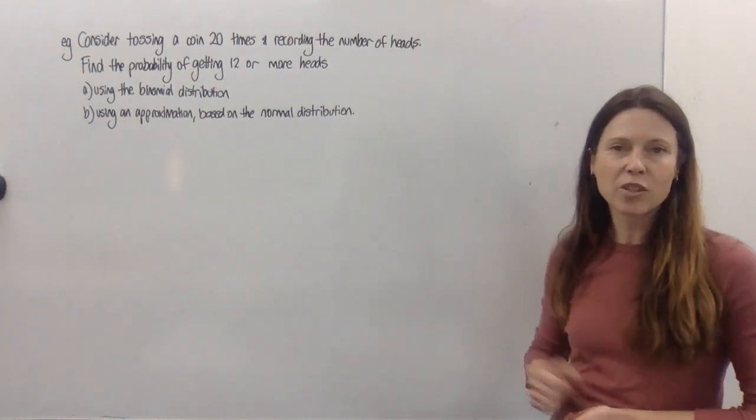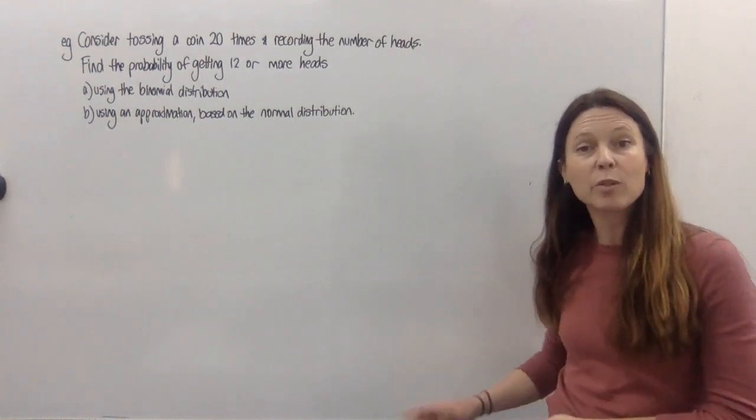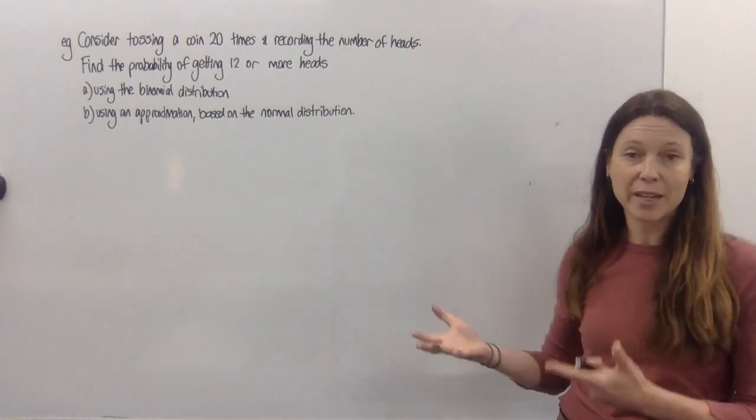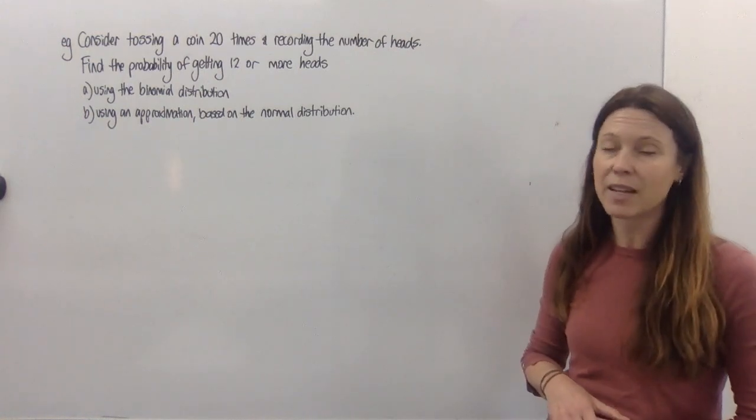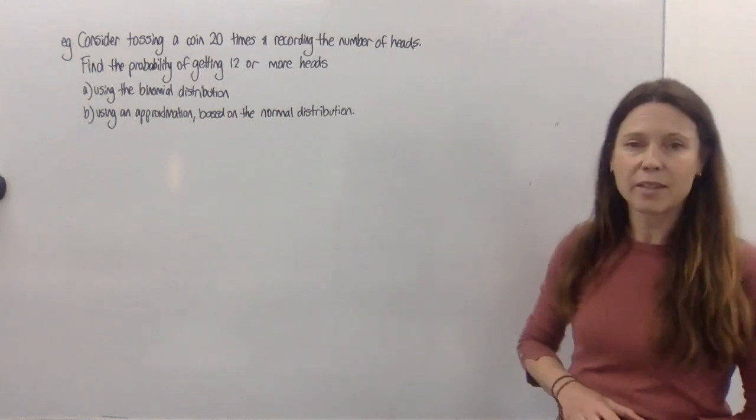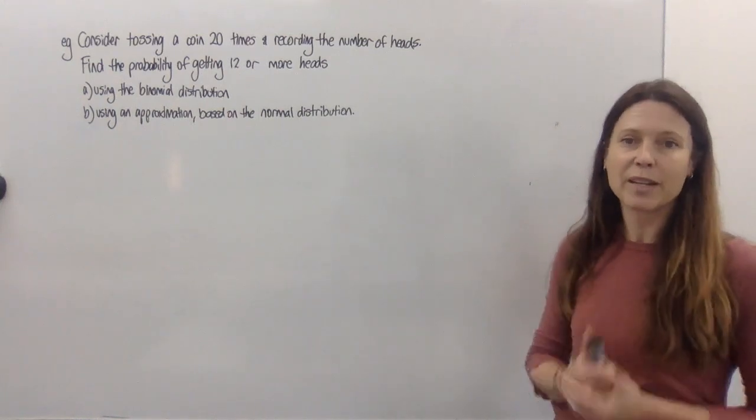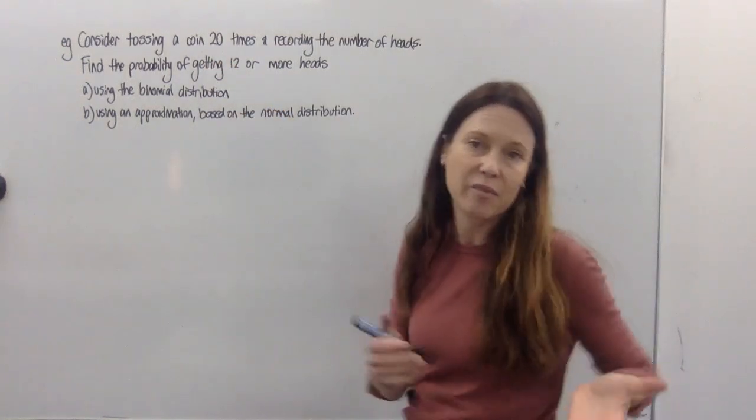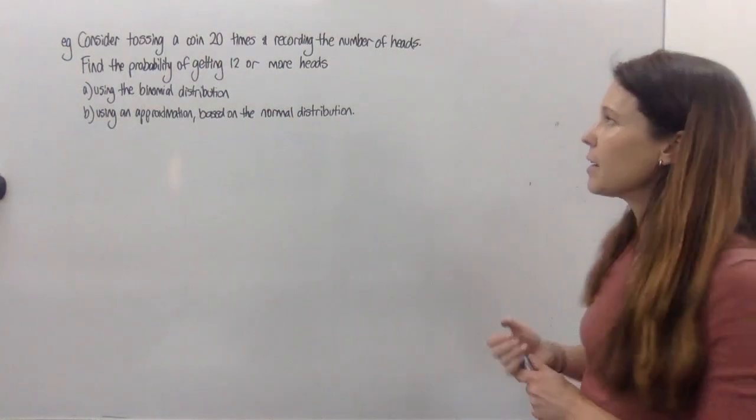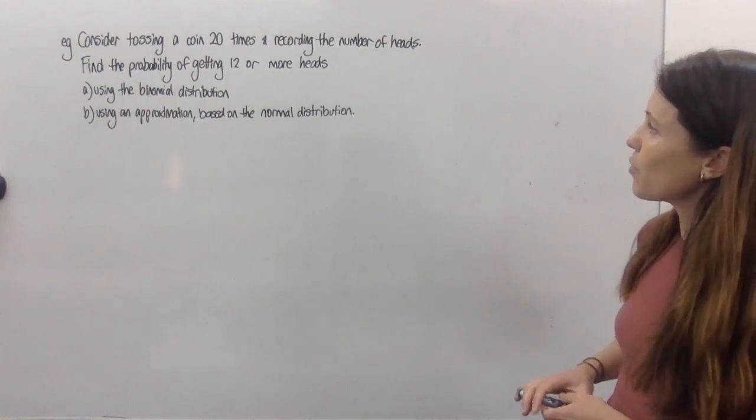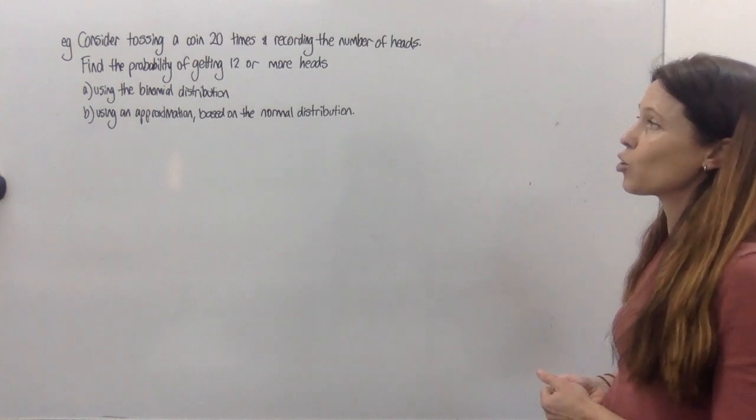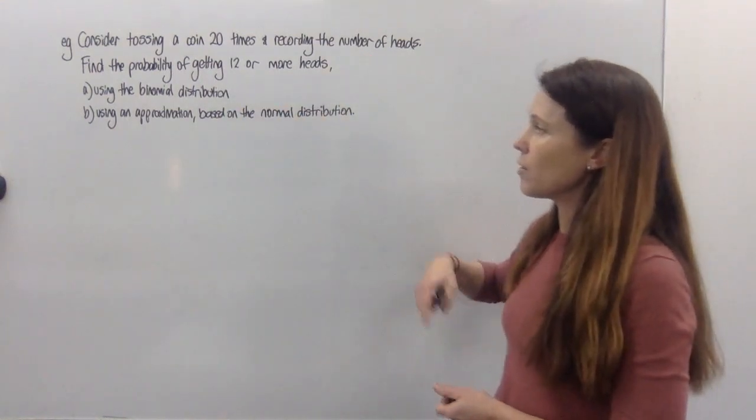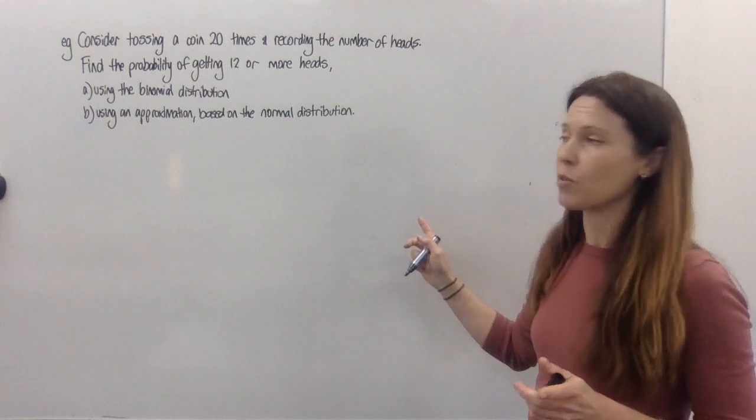Now in that last example, we never actually saw how good our approximation was because we never figured out the probability using the proper binomial techniques, which would have given us the exact answer. So now with this example, let's do it both ways and see how good the approximation is. We're tossing this coin 20 times, so n is fairly high, but not astronomically high. We're recording the number of heads. Find the probability of getting 12 or more heads using the binomial distribution and using an approximation based on the normal distribution.